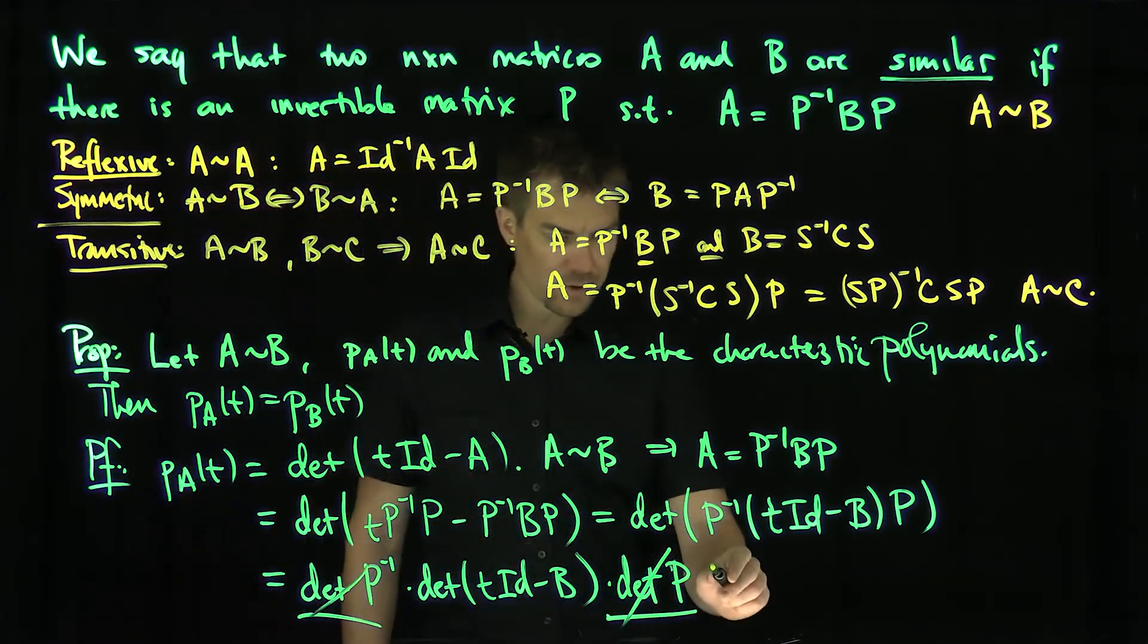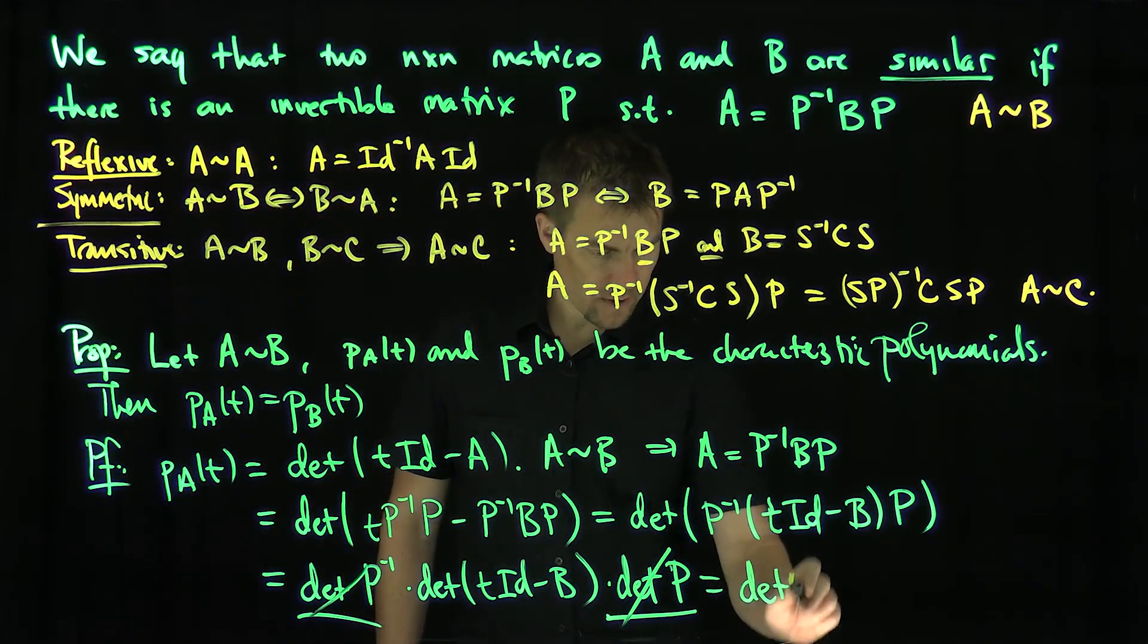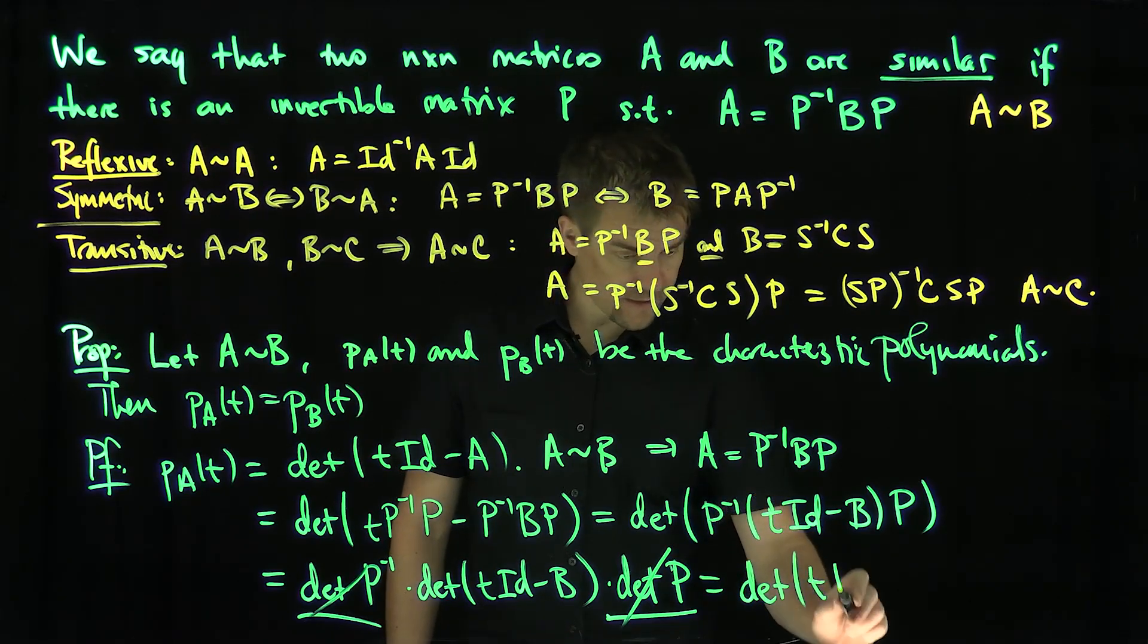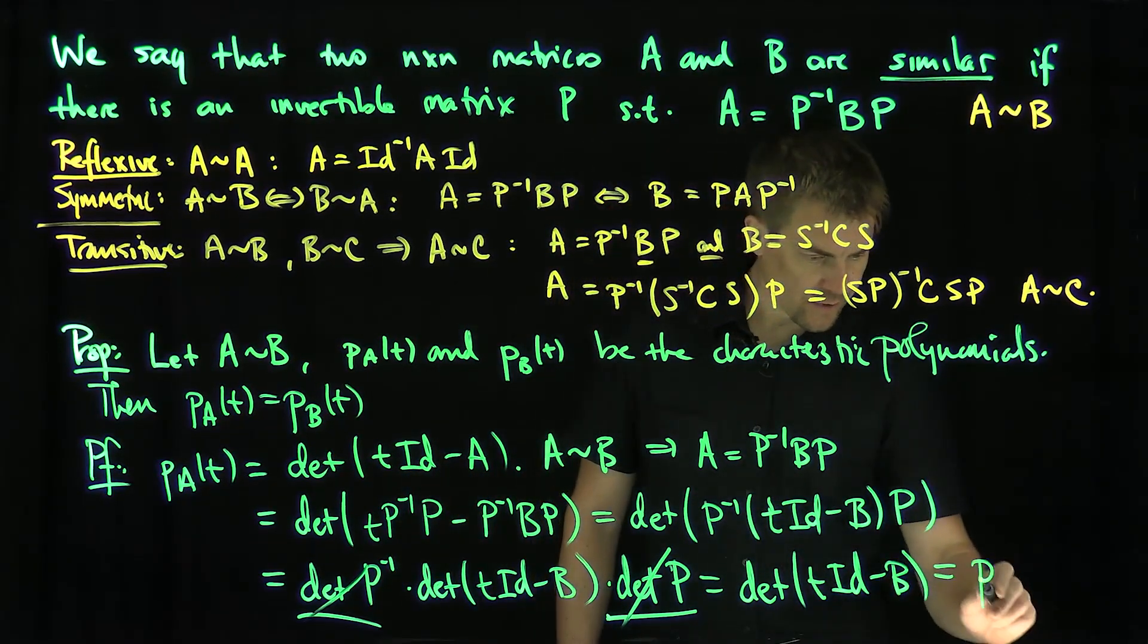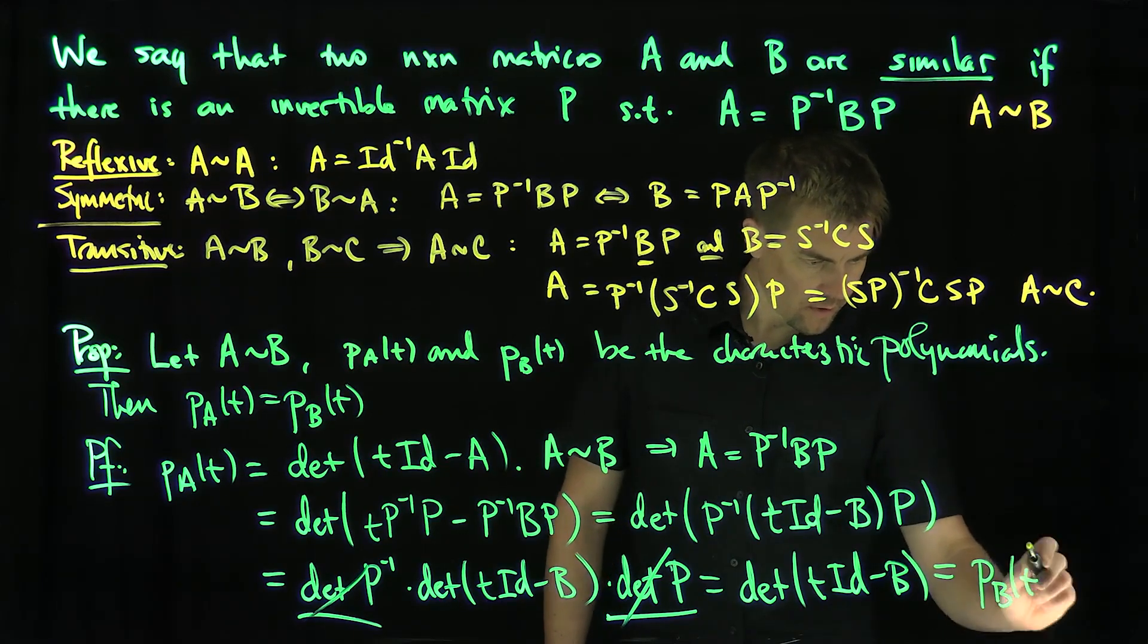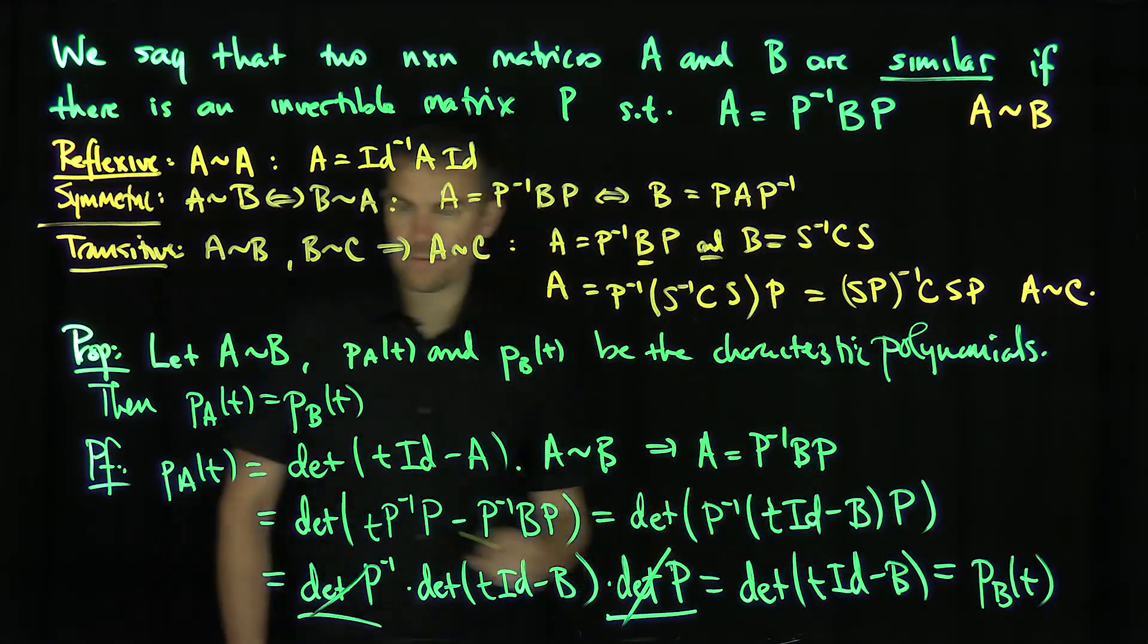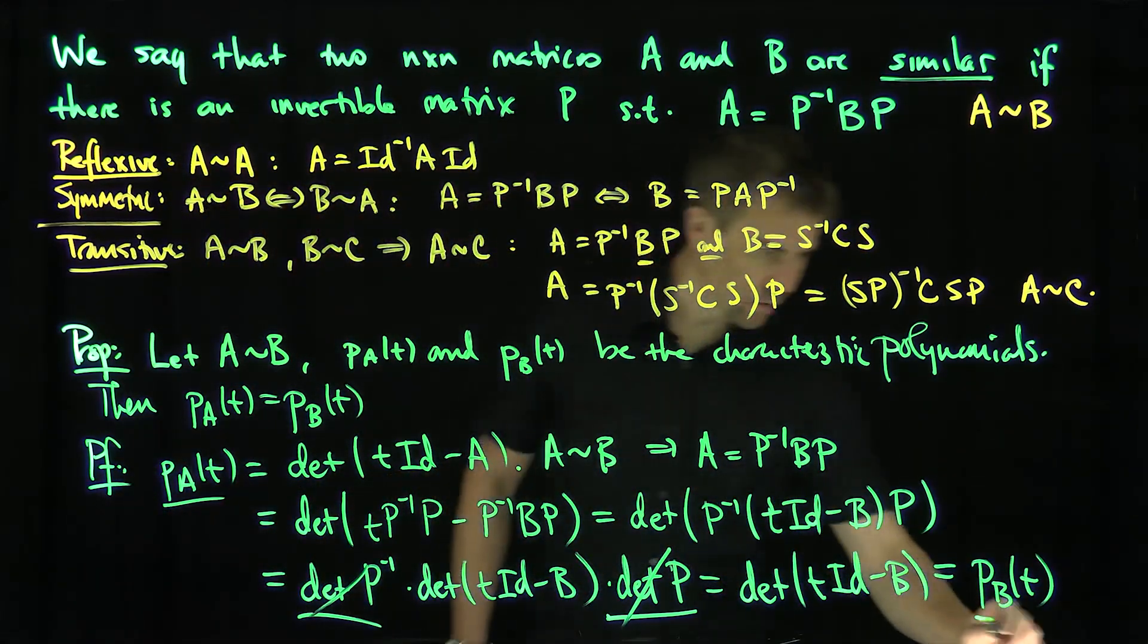by the product structure of the determinants times determinant of P. But the determinant of P inverse and the determinant of P cancel out because they're reciprocals. And so that's just equal to the determinant of T identity minus B, which is just the characteristic equation of the B matrix. So they have the same characteristic polynomial.